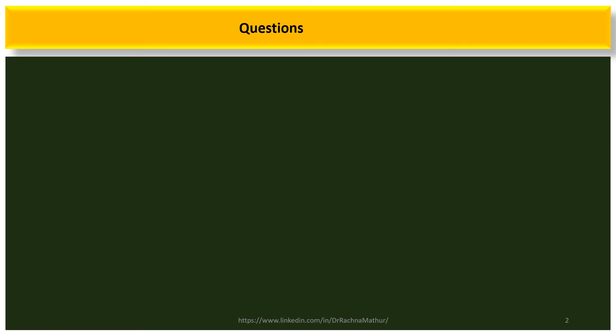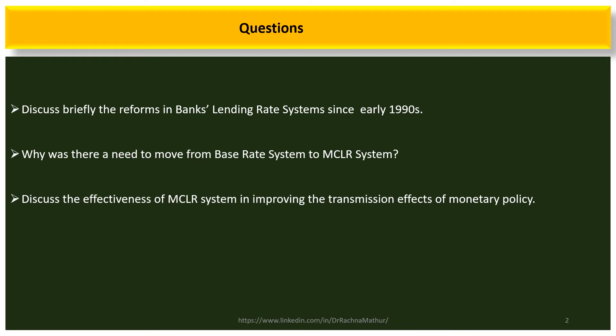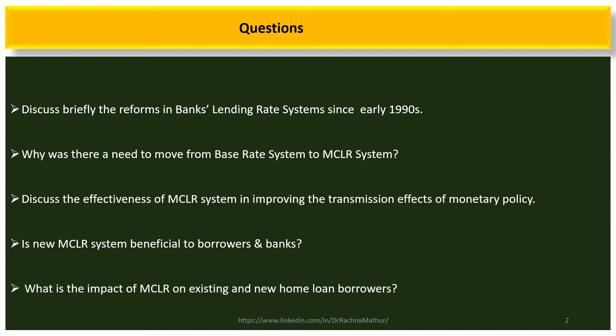Before starting a detailed discussion on MCLR, I would like to put some key questions in front of you. First, discuss briefly the reforms in bank lending rate systems since the early 1990s and why there was a need to move from the base rate system to MCLR. Second, discuss the effectiveness of MCLR in improving monetary policy transmission. Third, is the new MCLR system beneficial to borrowers and banks? And fourth, what is the impact of MCLR on existing and new home loan borrowers?